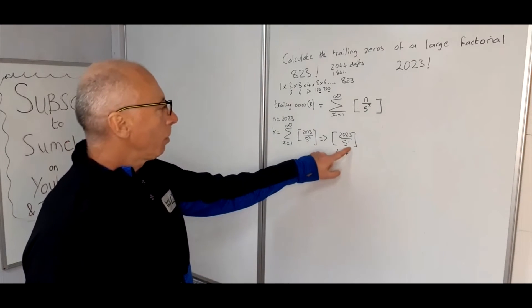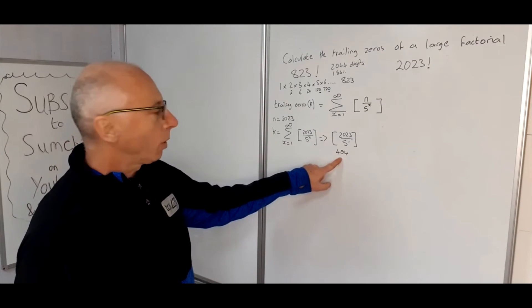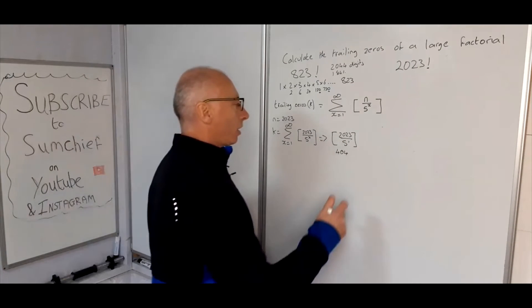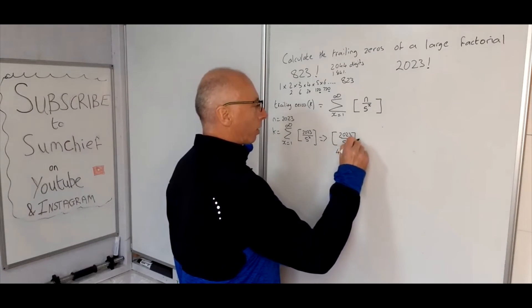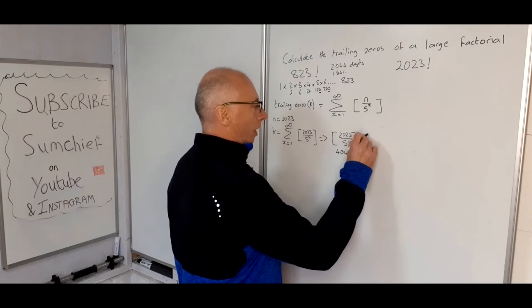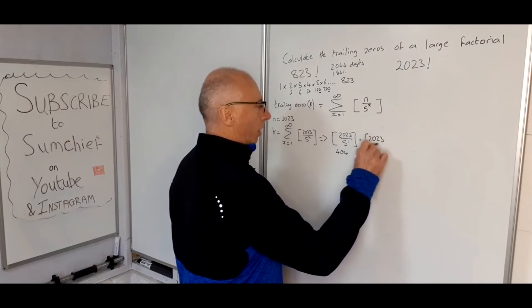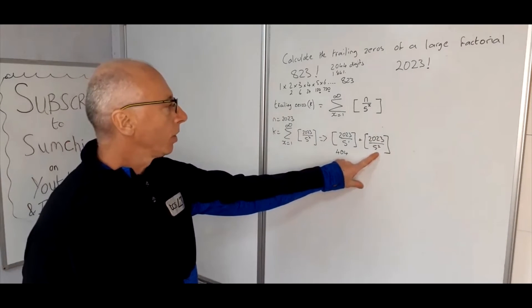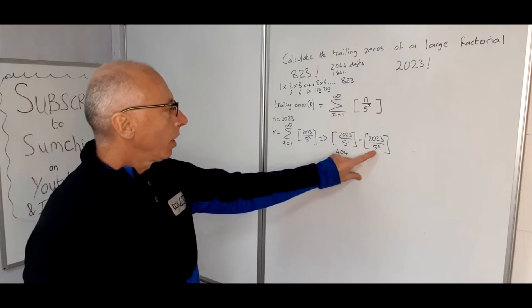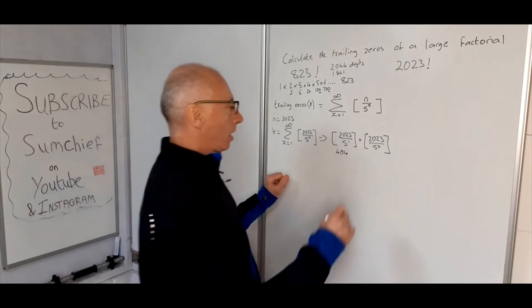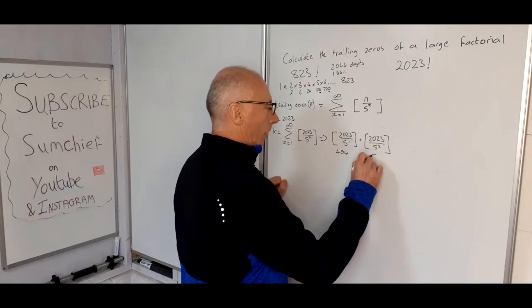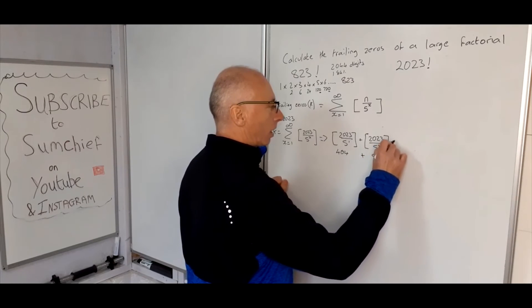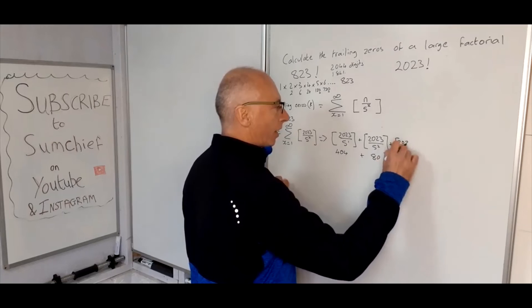So how many fives into 2023? Well, 400 times 5 is 2000, so 404 will be in. 5 times 404 will get 2020, and then that will give us our lowest value that we can do that's a whole number. And then we've got 2023 divided by 5 squared. Well, that's 5 squared is 25, 4 per 100, and we've got 20 of those, so that's going to give us 80.